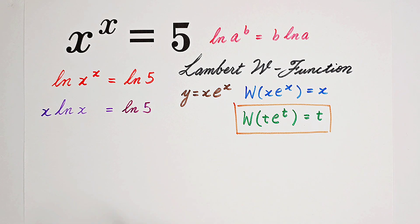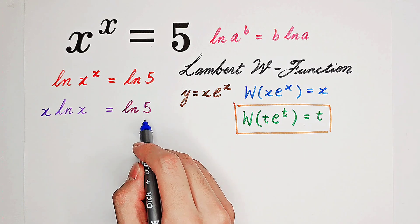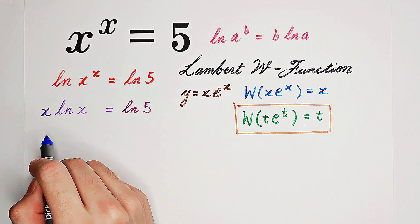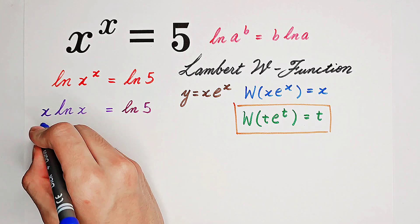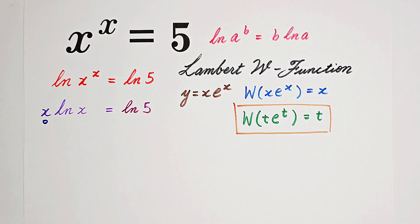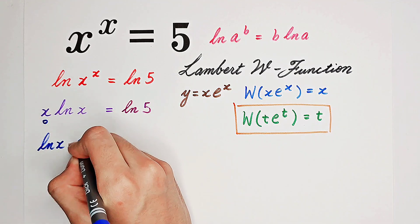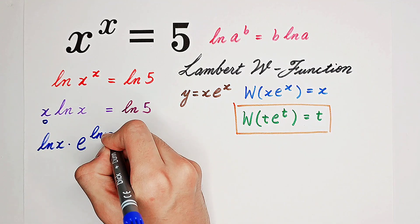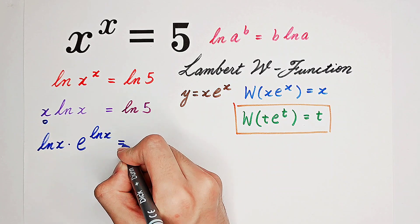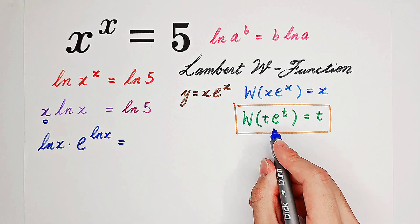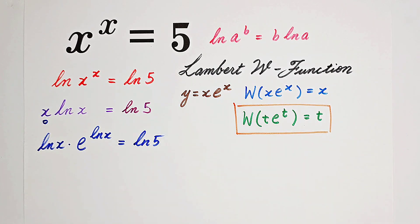Our right-hand side is just a constant. However, our left-hand side is a little bit ugly. So now I'm going to write this x as e to the power of natural log of x. So it's going to be the natural log of x times e to the power of the natural log of x, because we have to relate our left-hand side to our Lambert W function, to our t times e to the power of t.